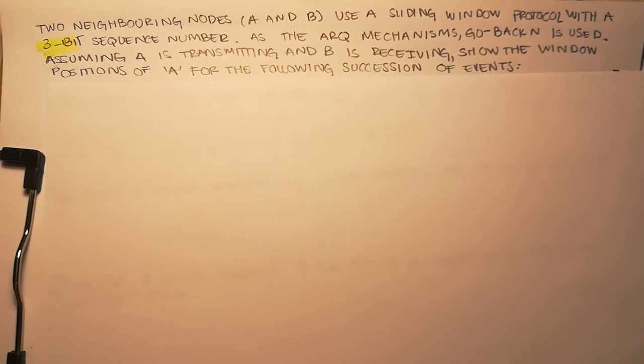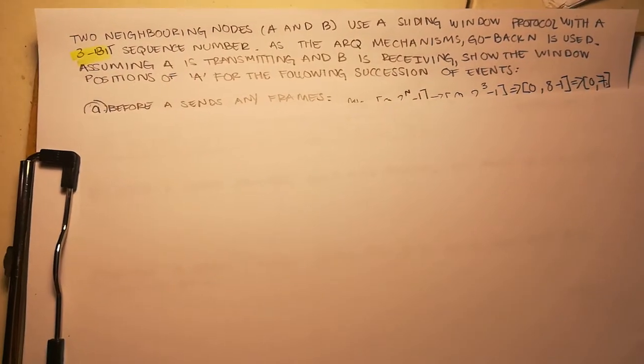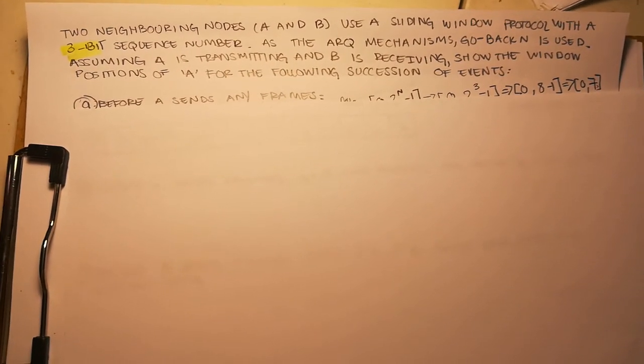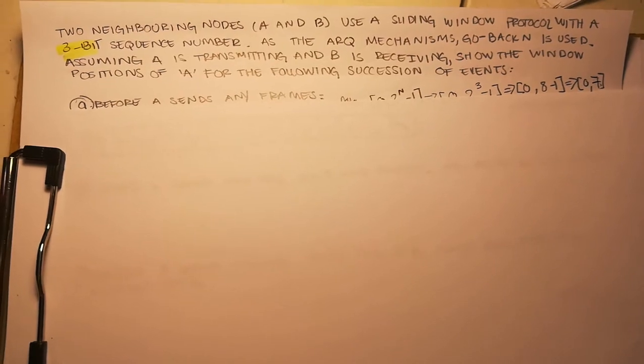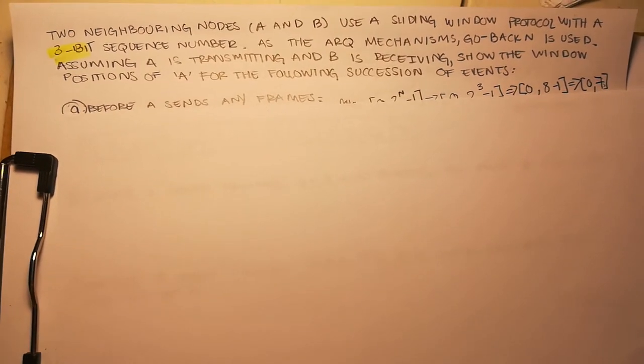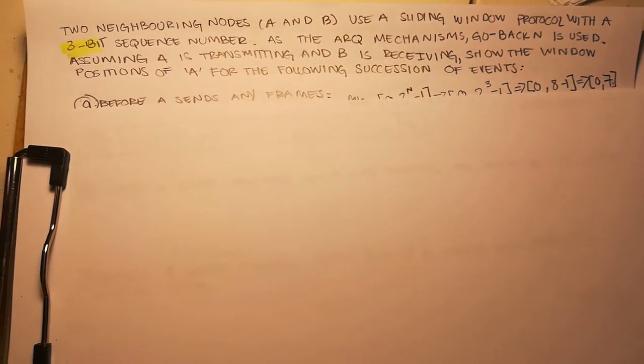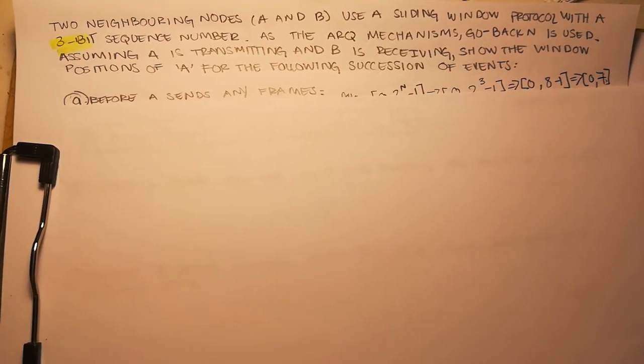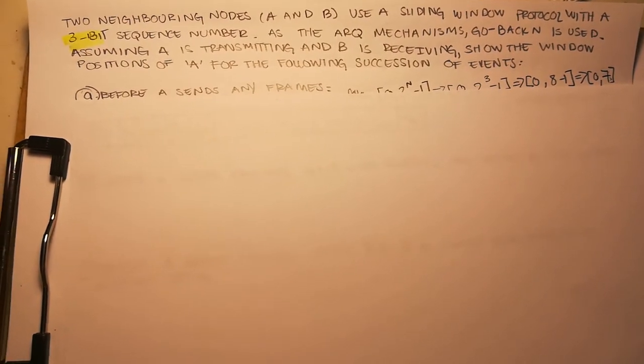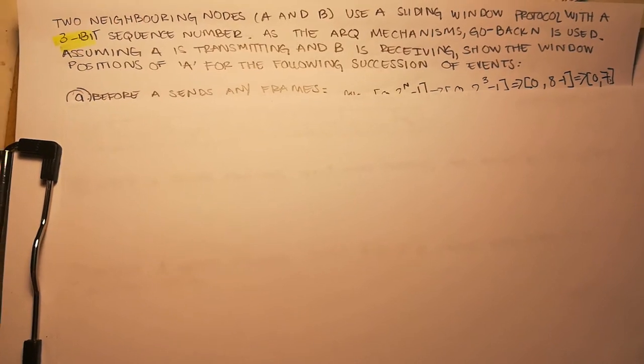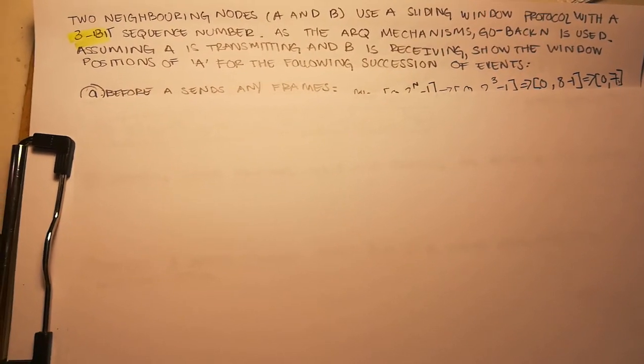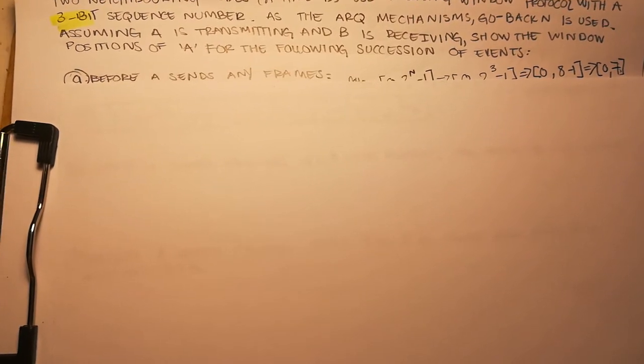Okay, so I'm going to be doing this sliding window problem. The problem reads: two neighboring nodes A and B use a sliding window protocol with a three-bit sequence number as the ARQ mechanism. Go-back-N is used. Assuming A is transmitting and B is receiving, show the window positions of A for the following succession of events.